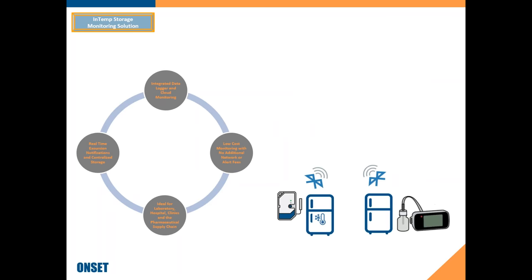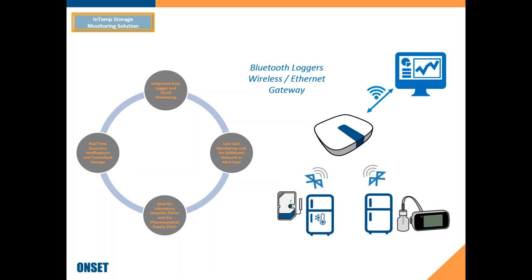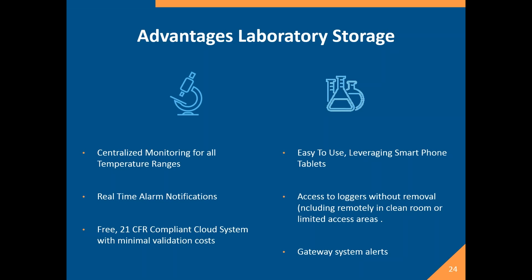With our gateway, you can enable real-time excursion notifications and centralized storage. You can set up alerts through email or text notification with our Bluetooth wireless gateway, and it really helps you control your risk and processes in labs or other areas. For the laboratory space: centralized monitoring, real-time notifications, and compliance. That easy-to-use smartphone app means you can roll it out across multiple labs without the cost or time of additional training. This is really nice for laboratory spaces that are working in clean rooms or restricted areas — because it's wireless technology, you can access your data without having to gown up and go into that clean room. With the gateways, you also get system alerts if there's a power outage or something going down when you're not there.